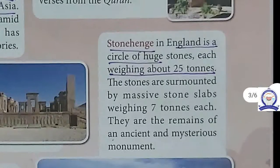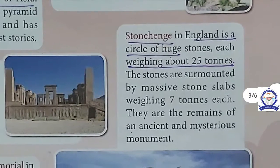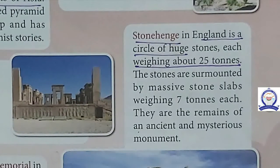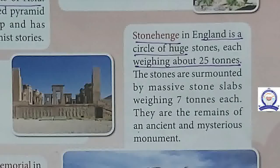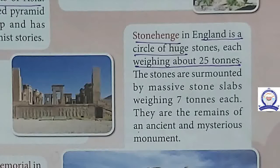The next one is Stonehenge in England. It is a circle of huge stones, each weighing about 25 tons. The massive stone slabs weigh about 7 tons each. It is an ancient monument.